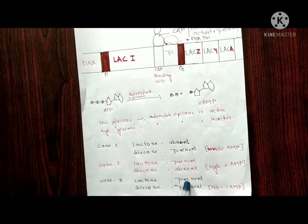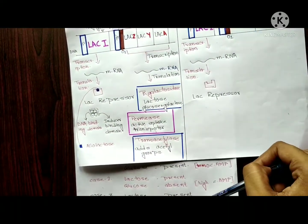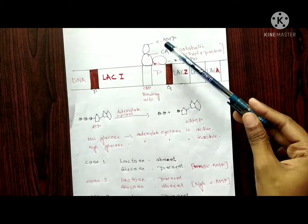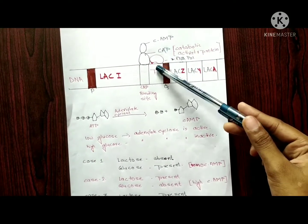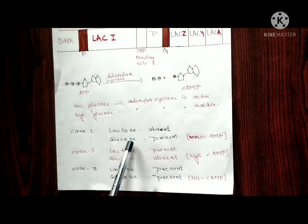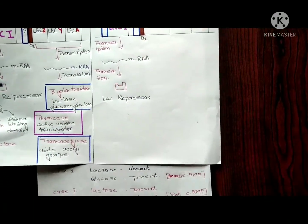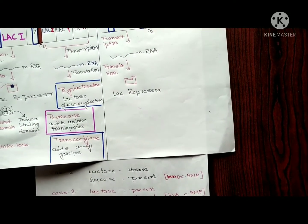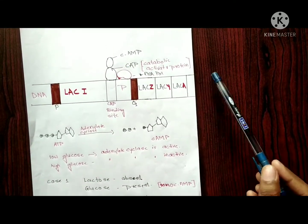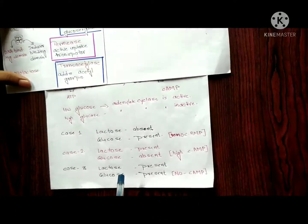Case 3: when both lactose and glucose are present. Lactose is present so the repressor is inactive, but glucose is also present, meaning adenylate cyclase is inactive, cyclic AMP is not produced, and CAP is not active. Therefore the transcription rate remains at a basal level. Case 1 represents negative regulation; Case 2 represents positive regulation with maximum transcription; Case 3 has transcription at basal level.